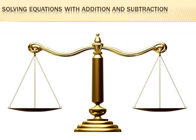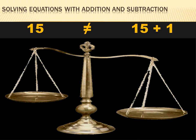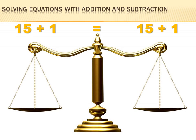Algebra is a little bit like the scales of justice — the scales are balanced when things are equal. If I had 15 equals 15, the scales are balanced; everything's even. But if I add 1 to just one side of the equation, it would no longer be balanced: 15 does not equal 15 plus 1. However, I can bring the scales back into balance by adding 1 to both sides. If I do the same thing to both sides of the equation, it's still an equation: 15 plus 1 equals 15 plus 1.